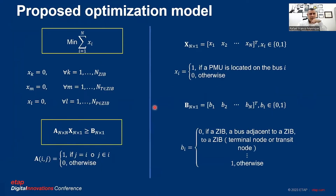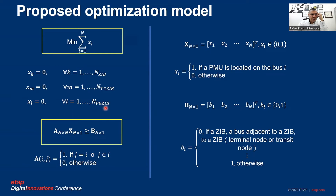The optimization model is presented here. The first equation defines X, which represents the minimal number of PMUs in the system. The constraint is zero if bus P is a ZIB and T is a terminal node, and zero if P is a ZIB and T is a transit node.